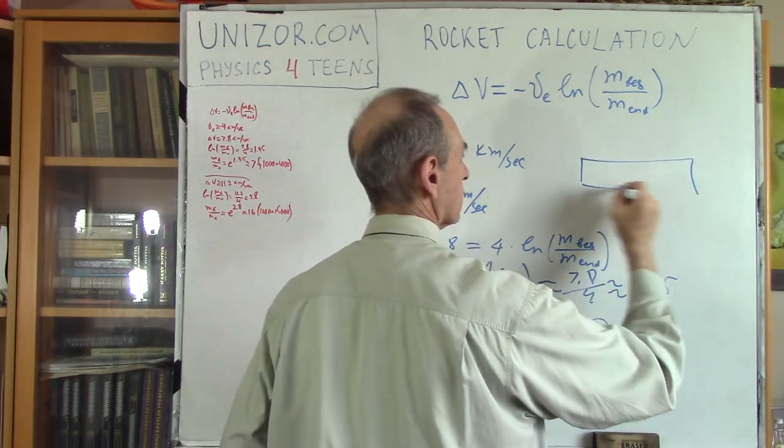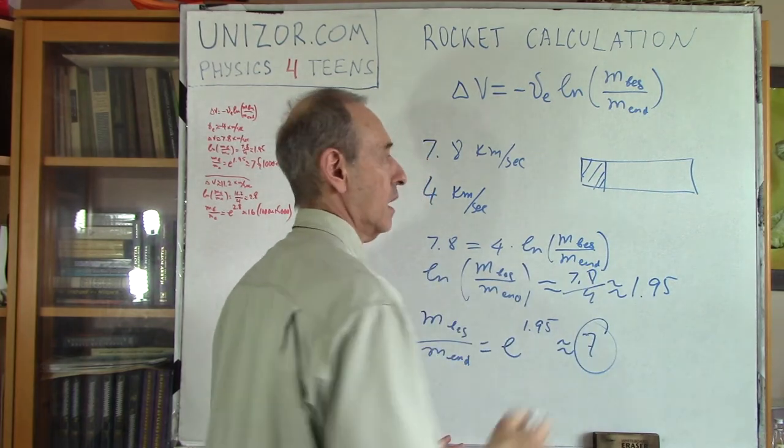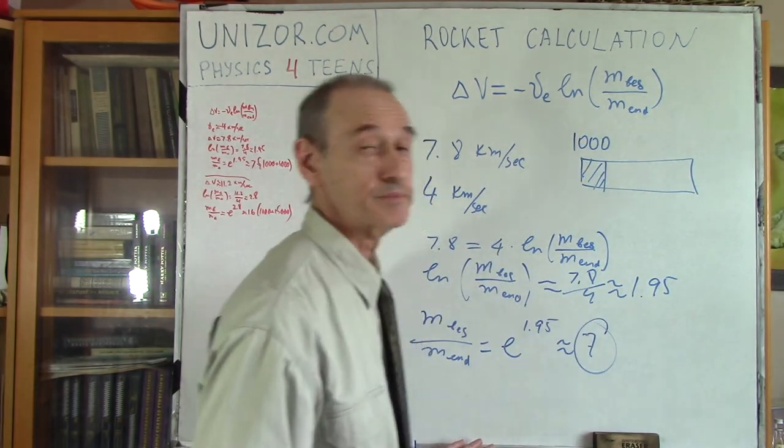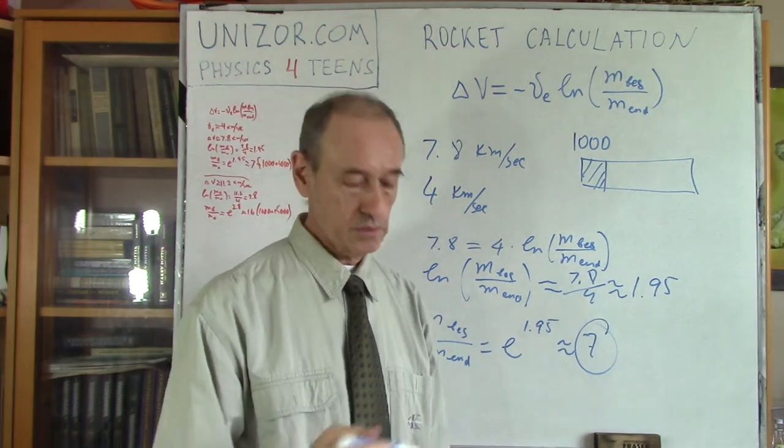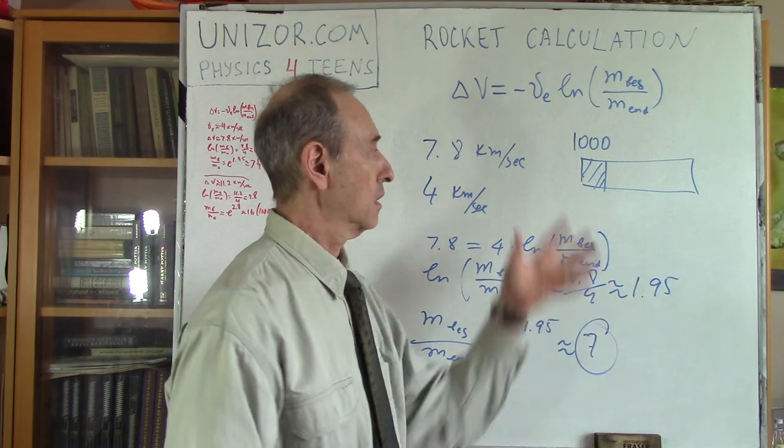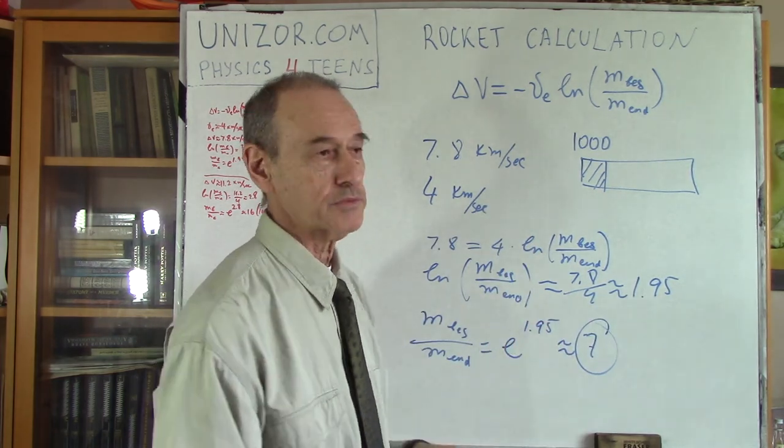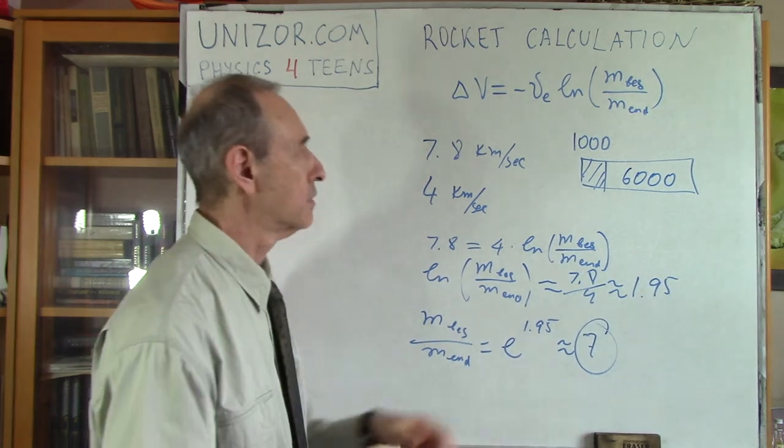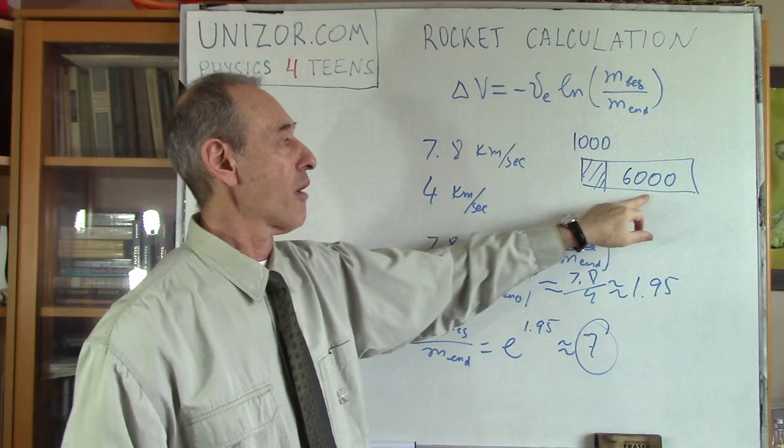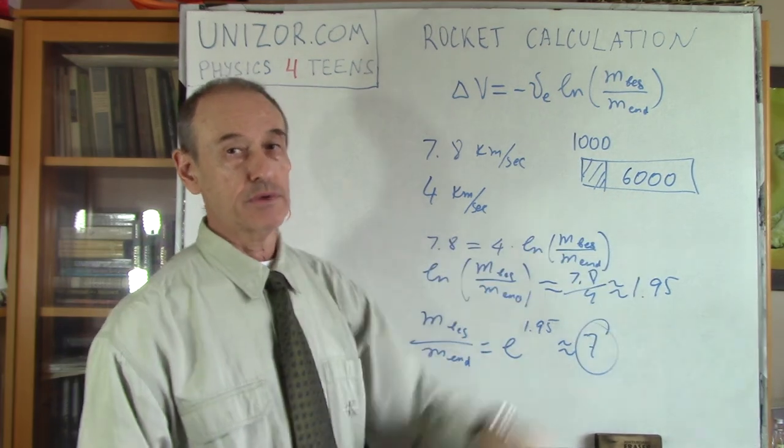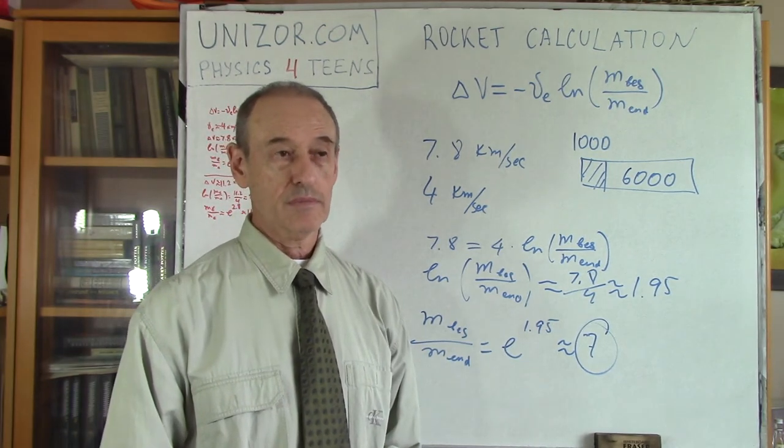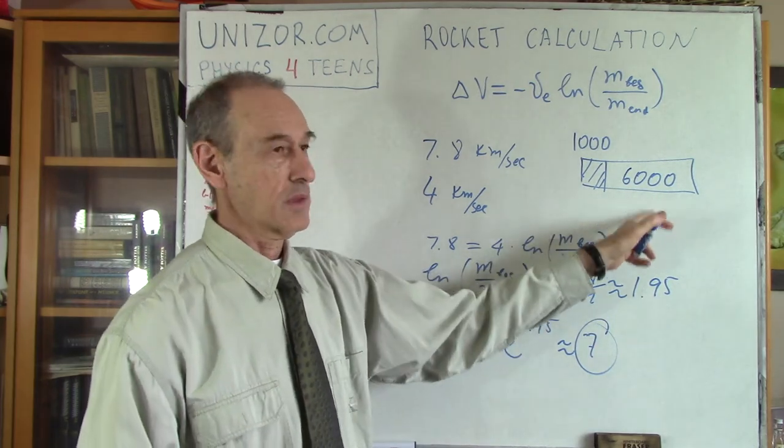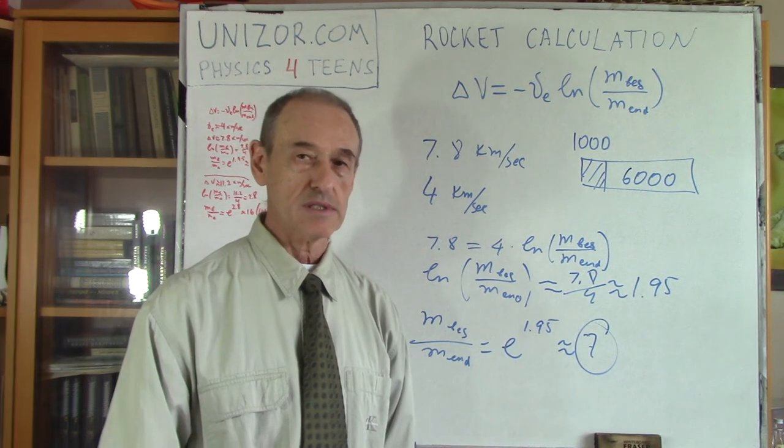Which means that if I have a rocket where this is the useful part, and this is my fuel, and let's say useful part is about 1,000 kilogram, one ton, metric ton, which is reasonable, because you have equipment, you have the body of the rocket itself. I mean, it's reasonable amount of weight, or mass, rather. Then this thing is supposed to be 6,000 kilograms. So for every ton you would like to launch on the orbit, you have to burn six tons, metric tons, of fuel.